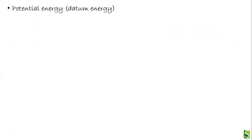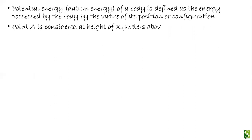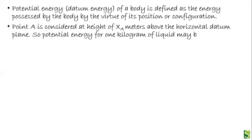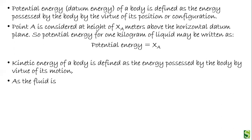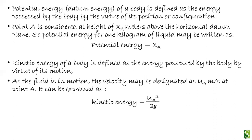The potential energy, or datum energy, is the energy possessed by a body by virtue of its position or configuration. Point A is considered to be at a height of x_A meters above the horizontal datum plane, so the potential energy for one kilogram of liquid is equal to x_A. The kinetic energy is the energy possessed by the body by virtue of its motion. As the fluid moves with velocity mu_A meters per second at point A, kinetic energy is equal to mu_A squared divided by 2g.